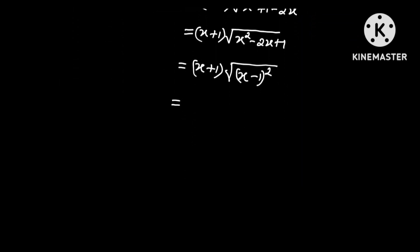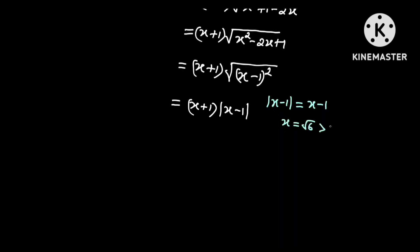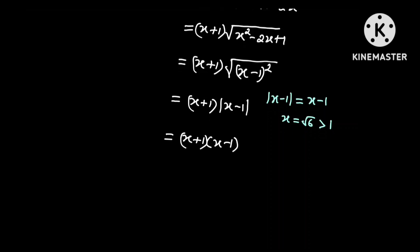And so this is equal to x plus 1 multiplied by the square root of x minus 1 all squared. And this is equal to x plus 1 multiplied by x minus 1, since the absolute value of x minus 1 is just x minus 1, given that x is equal to the square root of 6 which is greater than 1. And this is a difference of two squares, which is equal to x squared minus 1.